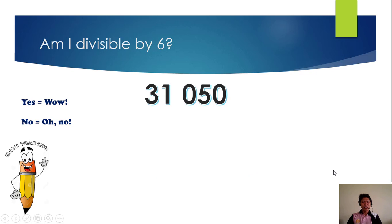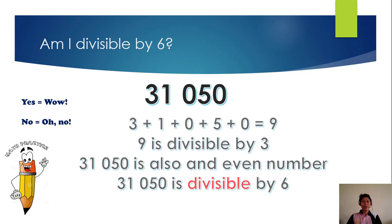Another: 31,050. So 3 plus 1 plus 5 is 9. 9 is divisible by 3, and it is also an even number, therefore it is divisible by 6. Wow.